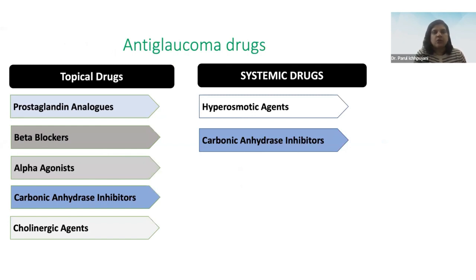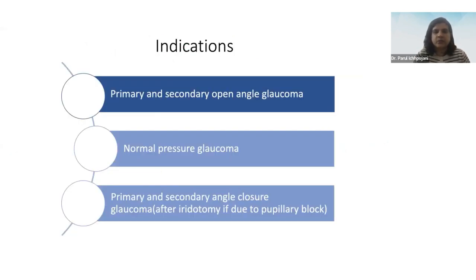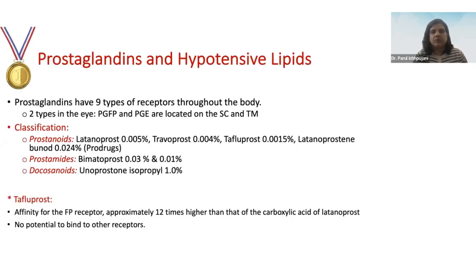The second category is anti-glaucoma drugs. There are five classes of topical anti-glaucoma agents: prostaglandin analogues, beta blockers, alpha agonists, carbonic anhydrase inhibitors, and cholinergic agents. Newer categories like Rho kinase (ROCK) inhibitors have also been added. Systemically, hyperosmotic agents or oral carbonic anhydrase inhibitors are used when pressures are very high. These drugs are used mostly for primary and secondary open-angle glaucoma, normal-pressure glaucoma, and primary and secondary angle-closure glaucoma.